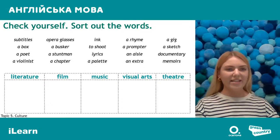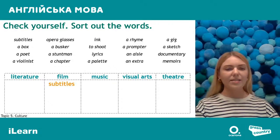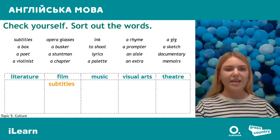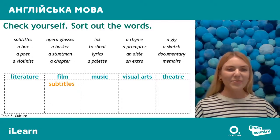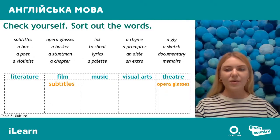Let's start with 'subtitles' — субтитри — and obviously it's about films. When we watch films in English, we can use subtitles. Then number two is 'opera glasses' — small glasses which you can use to see the stage better, like a binoculars. We often use them when we go to the theater.